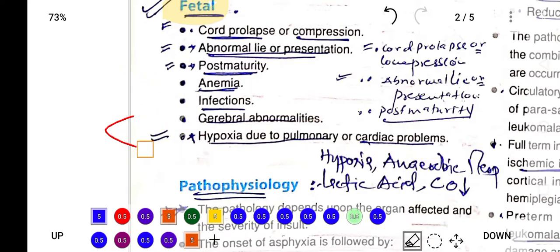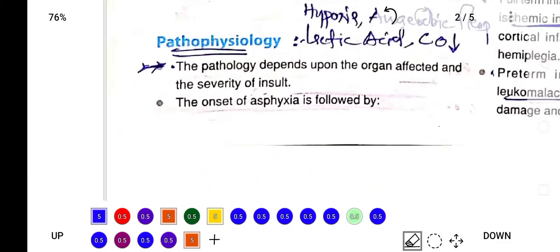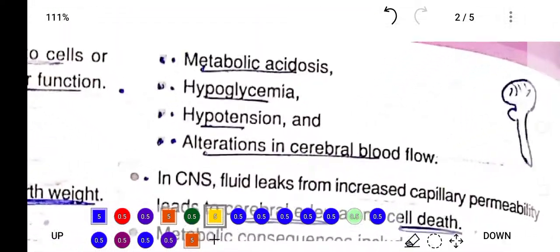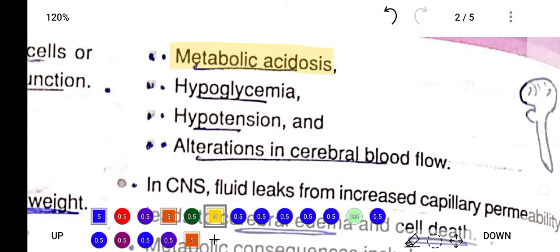Now the pathophysiology behind this condition: asphyxia occurs and is followed by metabolic acidosis because anaerobic respiration occurs, which accumulates lactic acid. That lactic acid creates an acidic condition and metabolic acidosis.